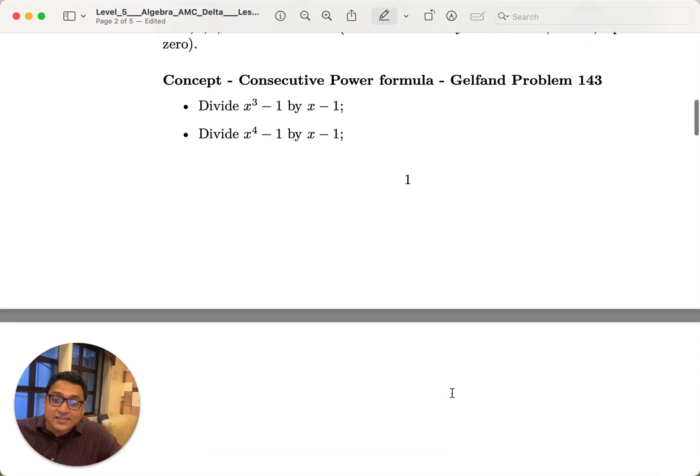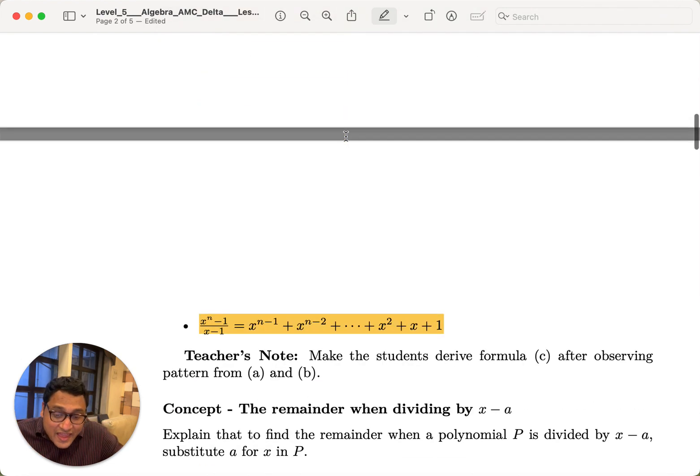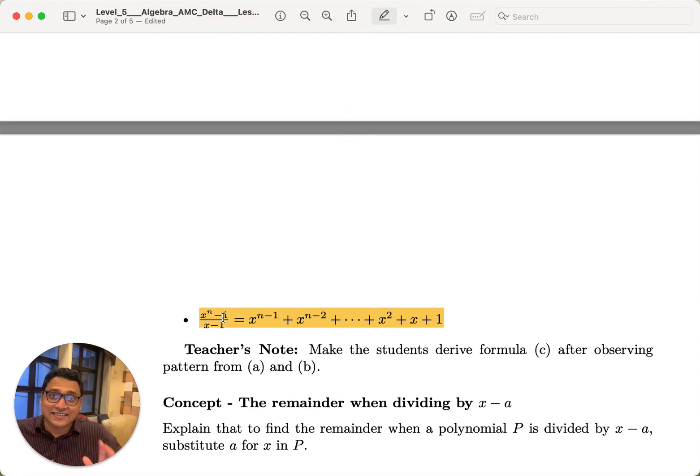We learn this using examples first. We do hands-on division of x cubed minus 1 by x minus 1, then x to the power 4 minus 1 by x minus 1, and we observe a pattern. Then we generalize the pattern and come to this particular formula.